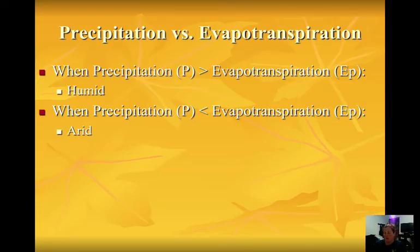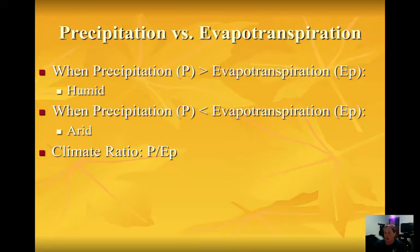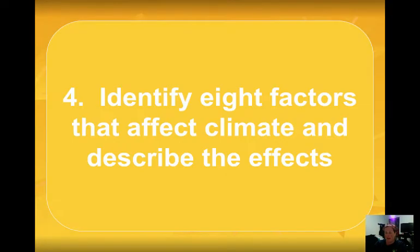We can compare these two factors to figure out what type of climate an area has. This is called your climate ratio, which is P over EP, where P stands for the amount of precipitation and EP is the amount of evapotranspiration. There are eight factors we're going to discuss that affect climate.